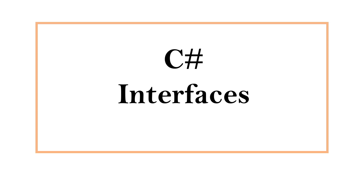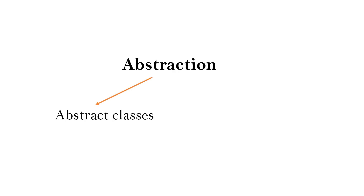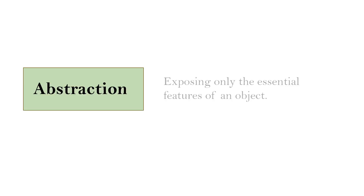Hi, this is Sahana. In this video, we are going to learn interfaces in C#. There are two primary ways to achieve abstraction. One is by using abstract classes and the other option is using interfaces. We have discussed abstract classes in our previous video — if you are interested, do check the description. Abstraction is the process of exposing only the essential features of an object while hiding the implementation details.